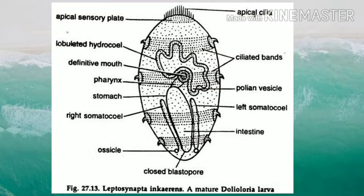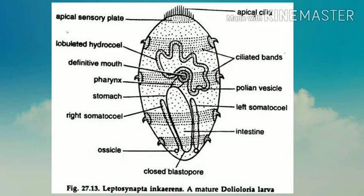A tuft of cilia with steep sensory hairs called the apical neural plate is found here. The anterior ciliated ring is ventrally incomplete. The internal structures become rotated at an angle of 90 degrees from the ventral to the posterior side, meaning the larva is slightly twisted.